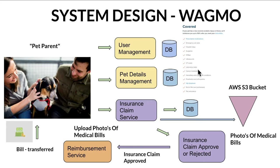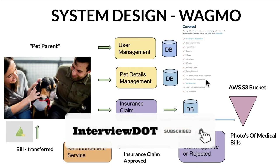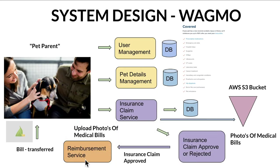For example, if the pet had a CT scan or X-rays, the system checks from the list of covered entities. If it is covered, the pet parent is automatically notified that the insurance claim has been approved. If it is not covered, unclear, or invalid, a notification is sent saying the insurance claim has been rejected. If approved, the pet parent is informed that the required amount will be transferred within a few days.